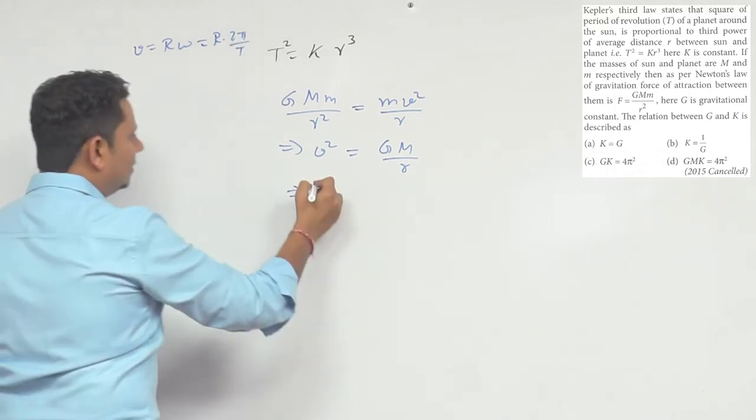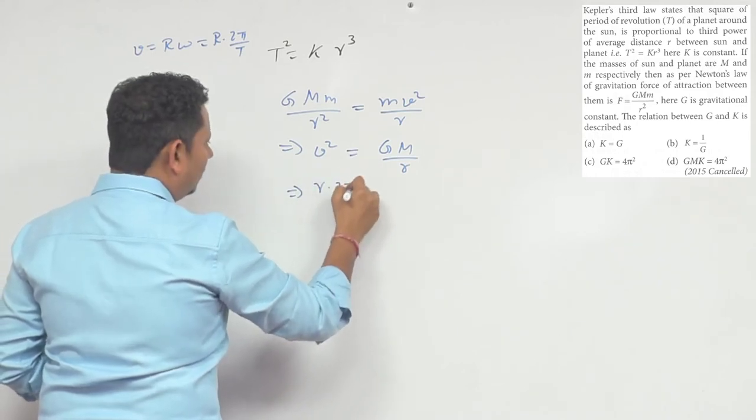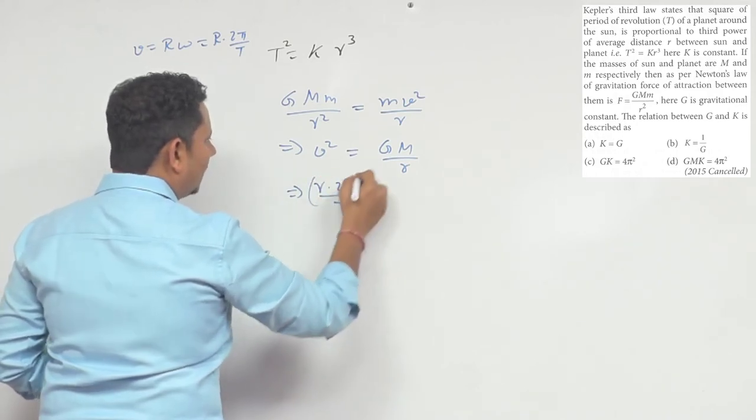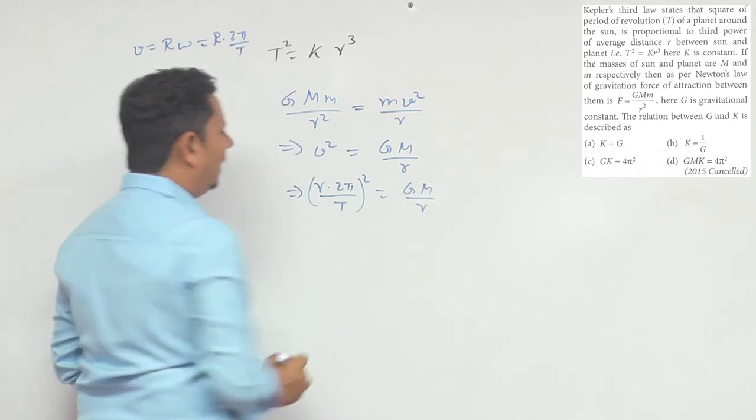So this will be equal to r multiplied by 2π/T, the whole square is equal to GM/r.